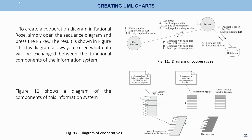To create a cooperation diagram in rational rows, simply open the sequence diagram and press the F5 key. The result is shown in Figure 11, which allows you to see what data will be exchanged between the functional components of the information system. Figure 12 shows a diagram of the components of the information system.